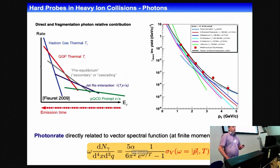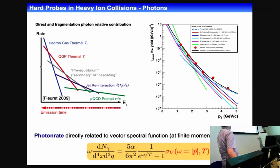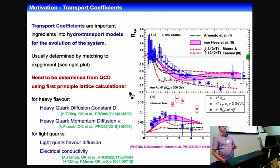The second motivation is to understand the same for photons. There might be a window for photon rates coming from a heavy ion experiment, a window where we might be sensitive to the thermal photons coming from the QGP. Here also we need the vector spectral function, but here at finite momentum, and then we directly get the photon rates.